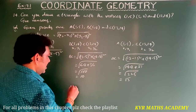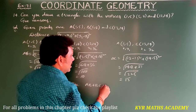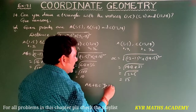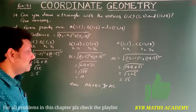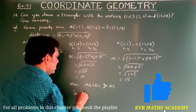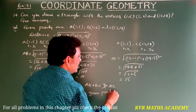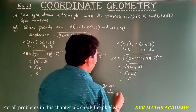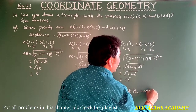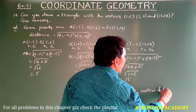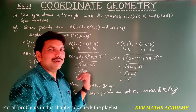Since AB plus BC is not greater than AC, the given points are not the vertices of a triangle. Have you understood clearly? Note it down.